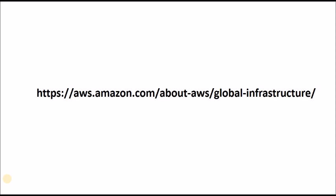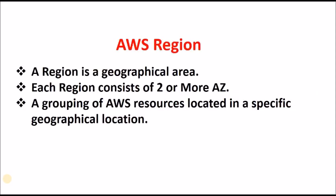The URL is aws.amazon.com/about-aws/global-infrastructure, or you can go to Google and directly type 'AWS Global Infrastructure' and select that particular URL. So let us see what is an AWS region.